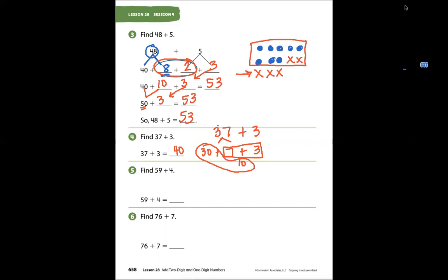Problem number 5 says find 59 plus 4. What is 59 in expanded form? 50 plus 9. Bring down the 4 plus 4. Now I have this 9 and I need to make it into a group of 10. Let's draw 9: 1, 2, 3, 4, 5, new line, 6, 7, 8, 9. How many more do I need to get to 10?